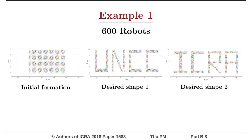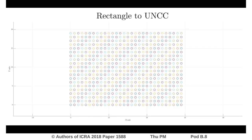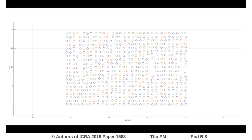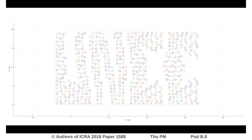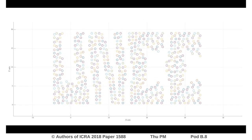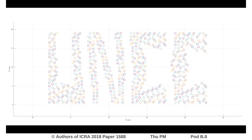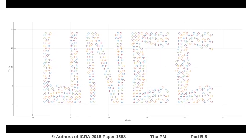In the first example, we have 600 robots in an initial rectangular formation which then move to form the letters UNCC and then ICRA. In this simulation, the robots are arranged initially in a rectangular grid. The location and the scale for the goal formation are not provided. The algorithm computes the optimal assignment with the scale and the translation parameters.